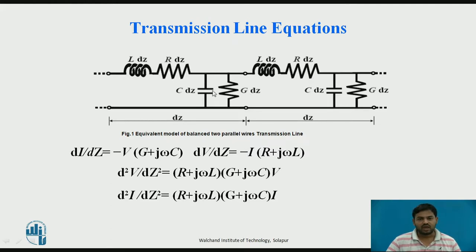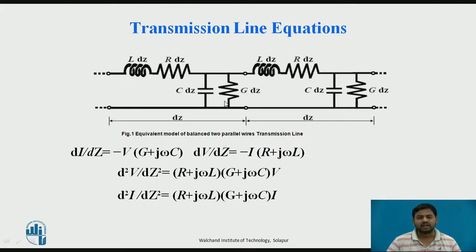This transmission line can be modeled as an inductor, resistors, capacitance, and conductance. The reason for using conductance here is for simplicity, as it can be easily added in parallel circuits.